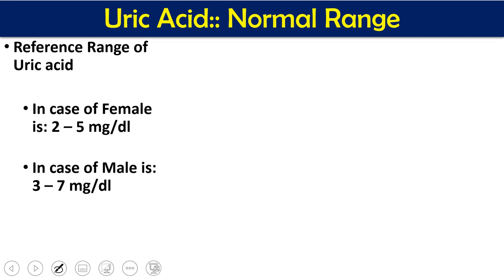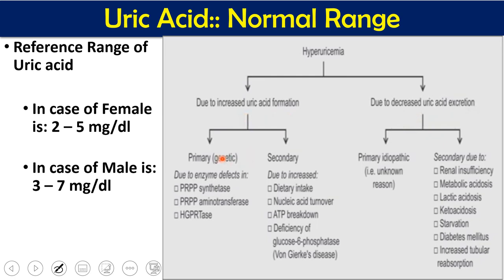The reference range of uric acid varies slightly between books. On average, for females it is 2 to 5 mg/dL and for males it is 3 to 7 mg/dL. When uric acid concentration rises above normal it is called hyperuricemia, and when it decreases it is called hypouricemia. Hyperuricemia can be caused by either increased uric acid formation or decreased uric acid excretion.